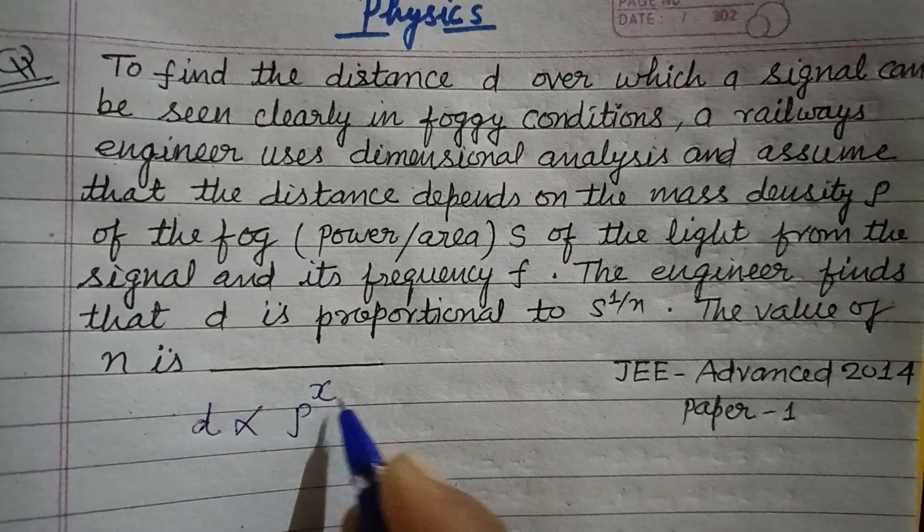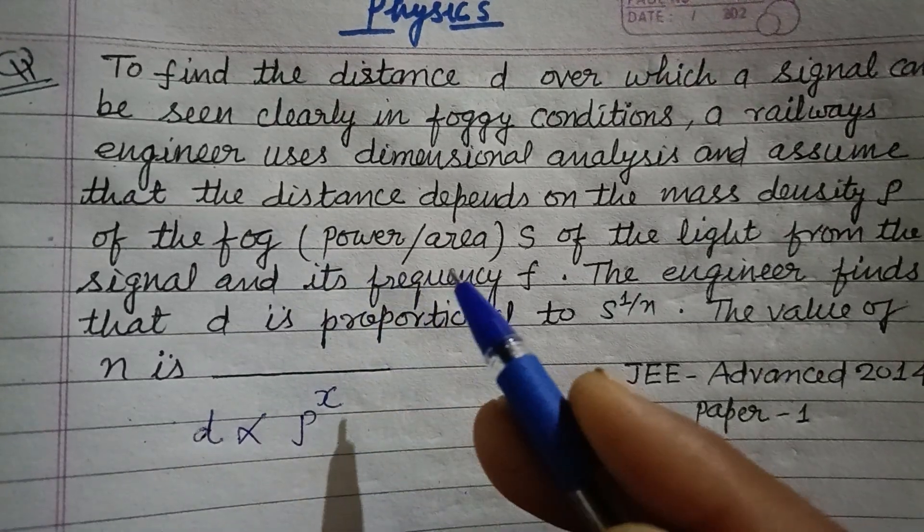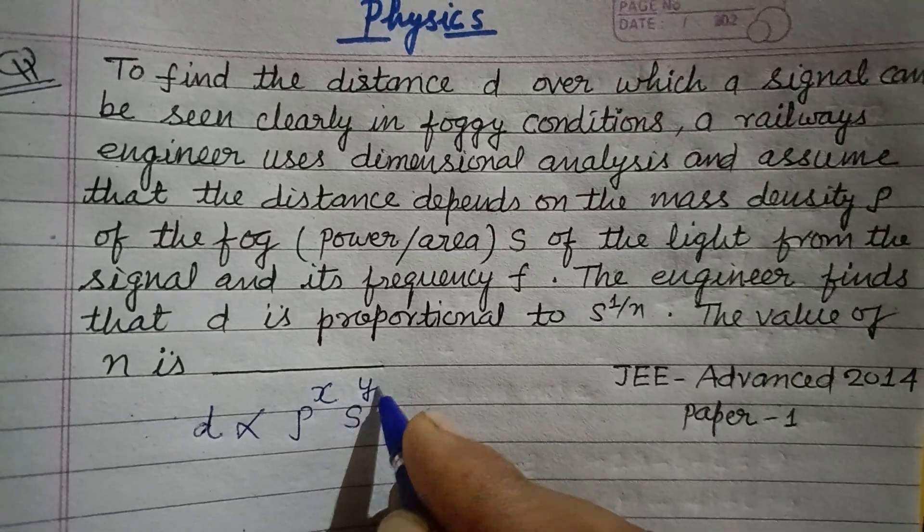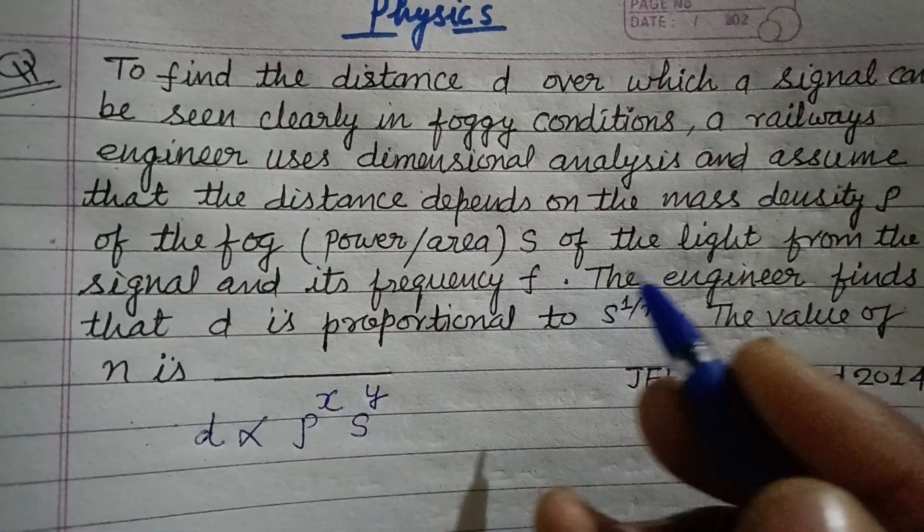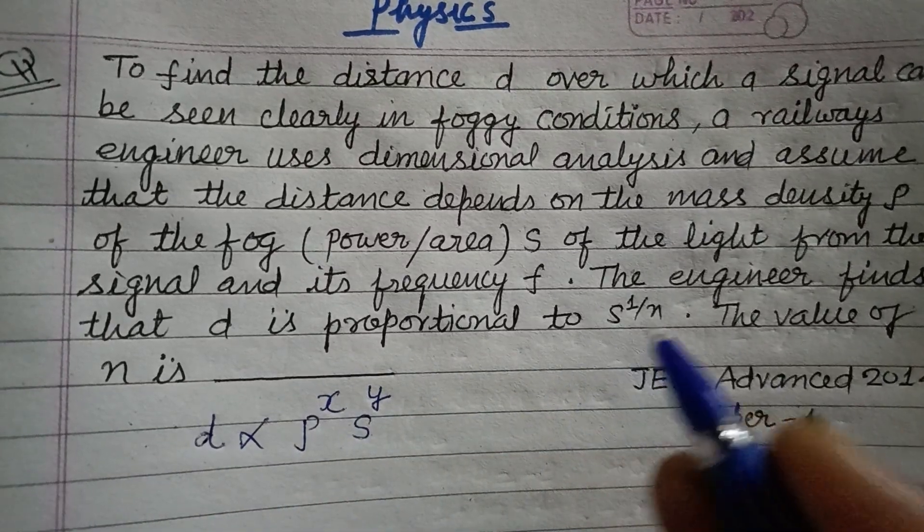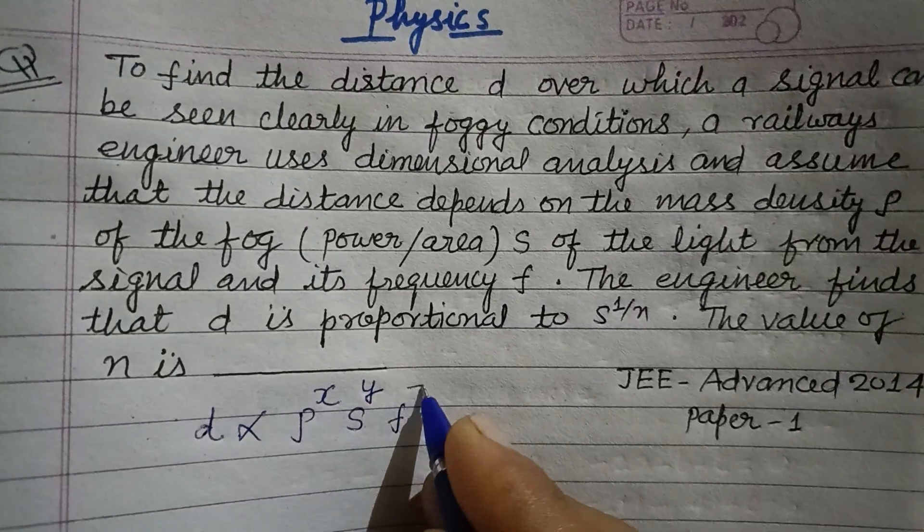Rho to the power x, and the power upon area s, s to the power y, and the light from the signal and its frequency. It also depends on its frequency, so frequency to the power z.